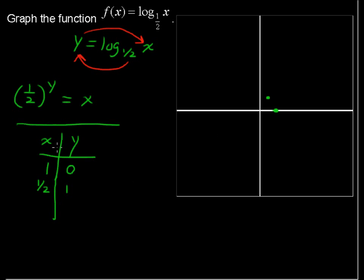What about when y is two? One-half squared equals one-fourth. So when x is one-fourth, y is two. This is going to shoot up.